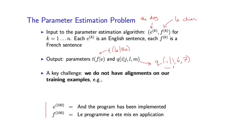A key challenge in this problem is that we are assuming we do not have alignments on our training examples. In an ideal situation, somebody would have annotated these alignments and they would be present in our training data. But that's really an unrealistic assumption — it's an extremely laborious task. Typical training set sizes can easily be in the order of hundreds of thousands of sentences, say 500,000 sentences. It's just too much to expect humans to annotate all of these alignments, or really any significant subset of them.